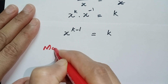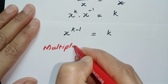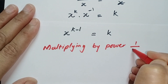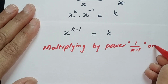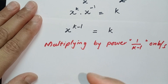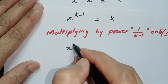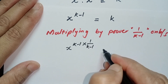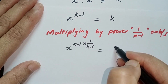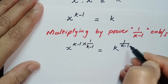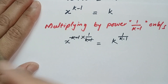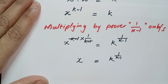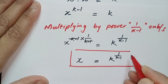We raise both sides of this equation to the power 1 over k minus 1. On the left, k minus 1 times 1 over k minus 1 cancels out, and we are left with: x is equal to k to the power 1 over k minus 1. This is the value of x in terms of k.